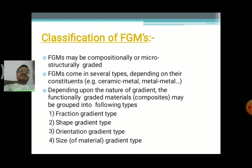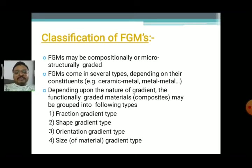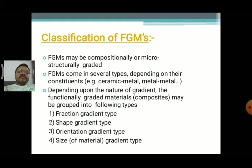The third classification divides materials based on the types of gradients or nature of gradients. We have divided the materials into four types: first is the fraction gradient type, second is the shape gradient, third is the orientation gradient type, and the last is the material gradient or size gradient. These are the four types in the last classification, and we are going to explain about these gradient types, which is an important one.